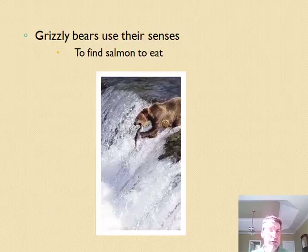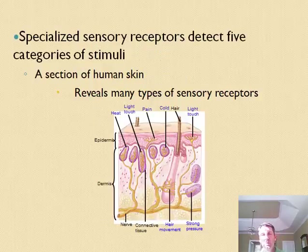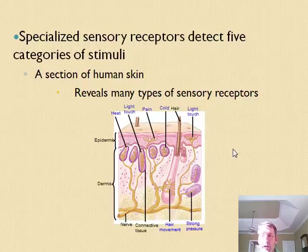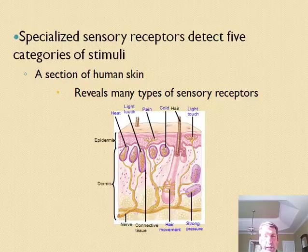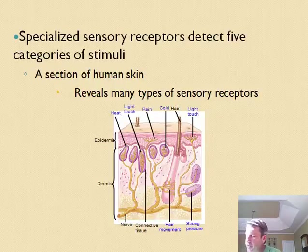We can group senses into categories based on the type of energy they respond to. Mechanoreceptors respond to mechanical energy — like touch, stretching, or gravity. When we touch a table, mechanoreceptors in our skin respond; some near the skin surface detect light touch, others are deeper. Chemoreceptors respond to chemical energy — like pheromones released by the opposite sex in moths, as well as taste and smell.